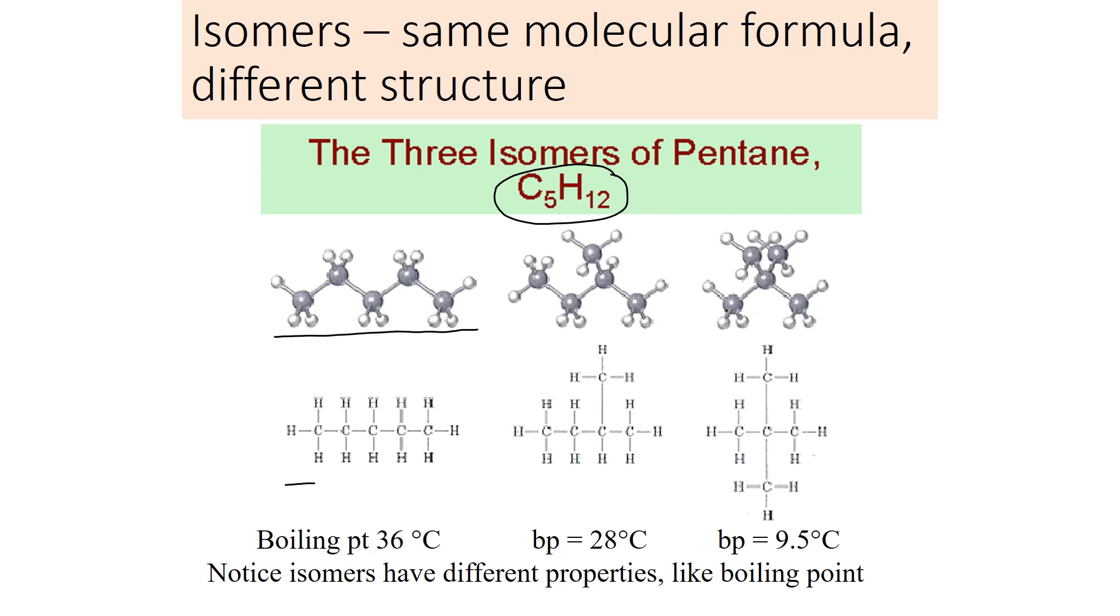The first way you can put all the carbons in a line. Now they're never quite in a line because we've got that tetrahedral shape around all the carbons. You can see the stick model and the structural formula. It looks like they're in a line, but they're never right in a line. That's one possible arrangement.